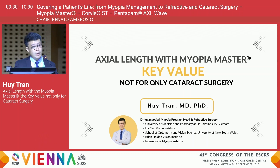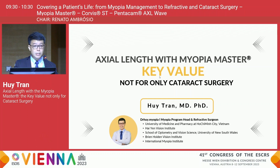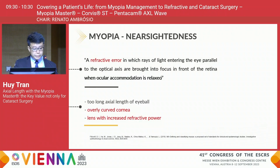We all know that myopia is now a global public health issue, in which the prevalence of myopia is estimated to affect about 50% of the world population by 2050, and myopia control treatment is imperative. How do we measure and monitor the progression of myopia? Let's go back to the current definition of myopia.